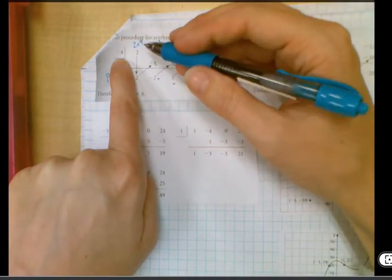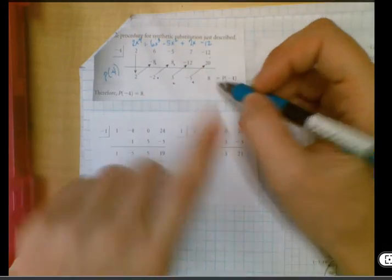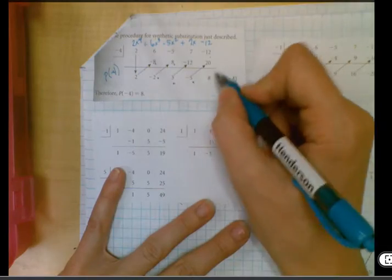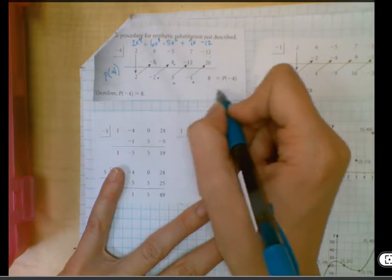Negative 5 times negative 4 gives us 20, add straight down, we get 8, which is what we got when we did it the long way, but this is much friendlier.